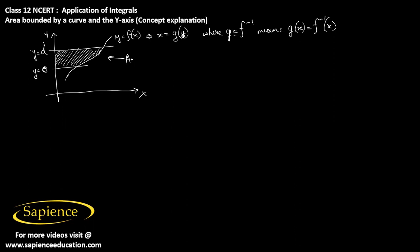Therefore, the area will be equal to the integral of x dy. Since x equals g of y, this becomes the integral of g of y dy, integrated from y equals c to y equals d. So the required formula to find the area bounded by the curve and the y-axis is the integral from c to d of g of y dy.